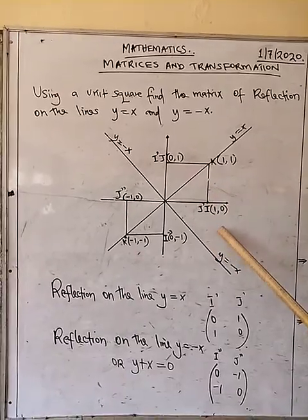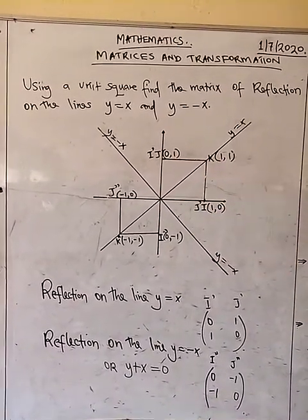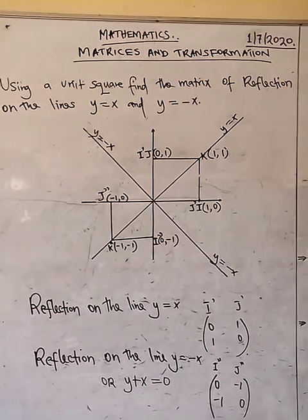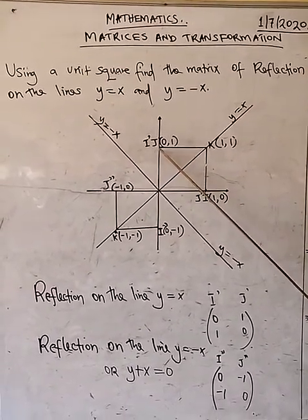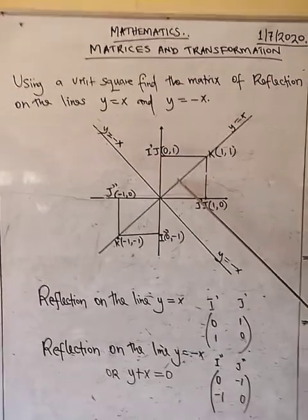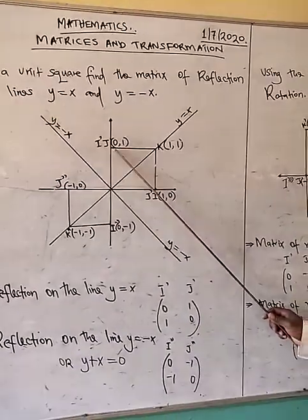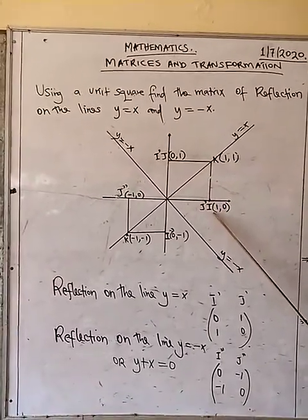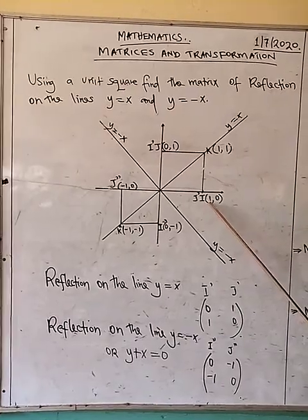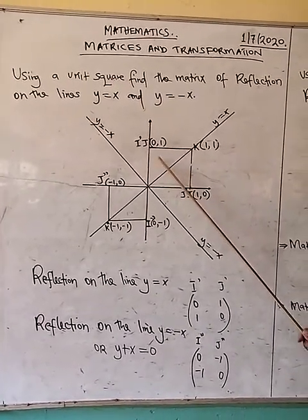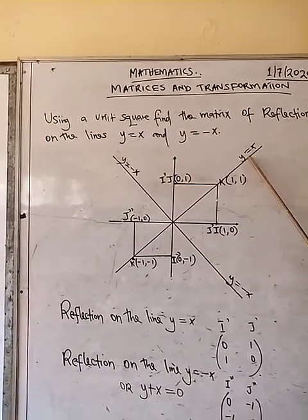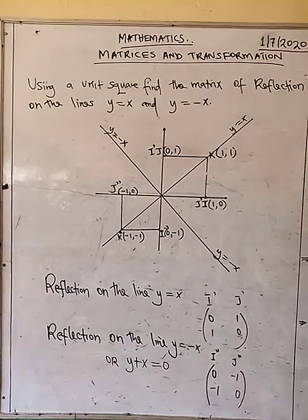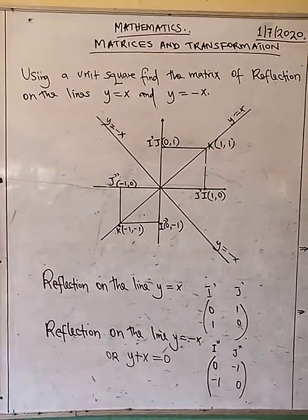Consider our unit square — the i, the j, and the k. When we reflect the unit square on the line y equals x, the j coordinates will be reflected into the i. So we'll have the coordinate of j' here after reflection. The same when we reflect the i coordinate, it will be at j. So we realize that the line y equals x is our middle line, and all the coordinates interchange. The one on the y-axis becomes on the x, and the one on the x-axis moves to the y-axis.